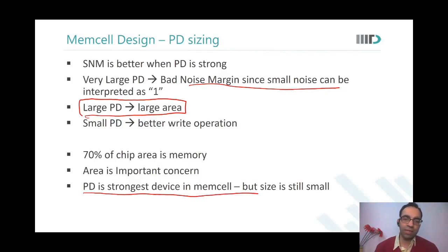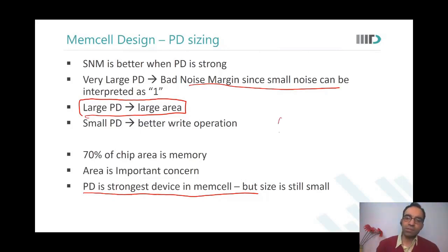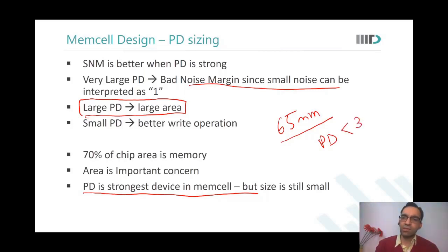Pull down is the strongest device, but it is still a small device — it cannot be very big. In 65 nanometer technology, when you work on your projects, you have to ensure that your pull down is the largest or strongest amongst all devices, but still less than 300 nanometers or 250 nanometers in width.